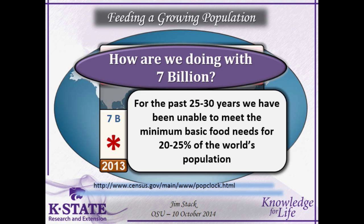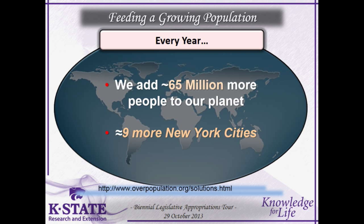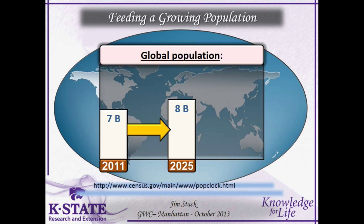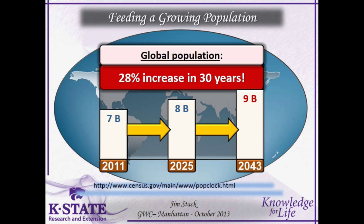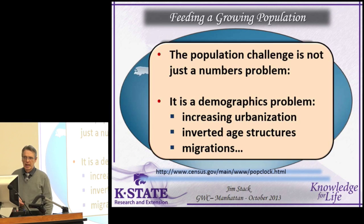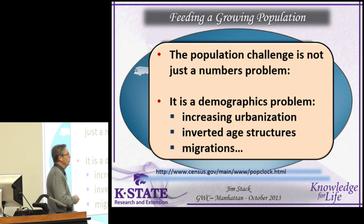By 2025 we'll hit 8 billion, by 2043 nine billion — that's a 28 percent increase in the next 30 years. The population challenge is not just a numbers problem, it's a demographics problem. We have increasing urbanization — we crossed a threshold a few years ago where over 50 percent of the world's population lives in an urban setting, and that's going to rise to almost 70 percent this century. It's an inverted age structure, a lot of old folks. In 2000, 189 nations signed a declaration called the Millennium Development Goals: to eradicate extreme poverty, alleviate extreme hunger, improve public health and nutrition, and ensure environmental sustainability.